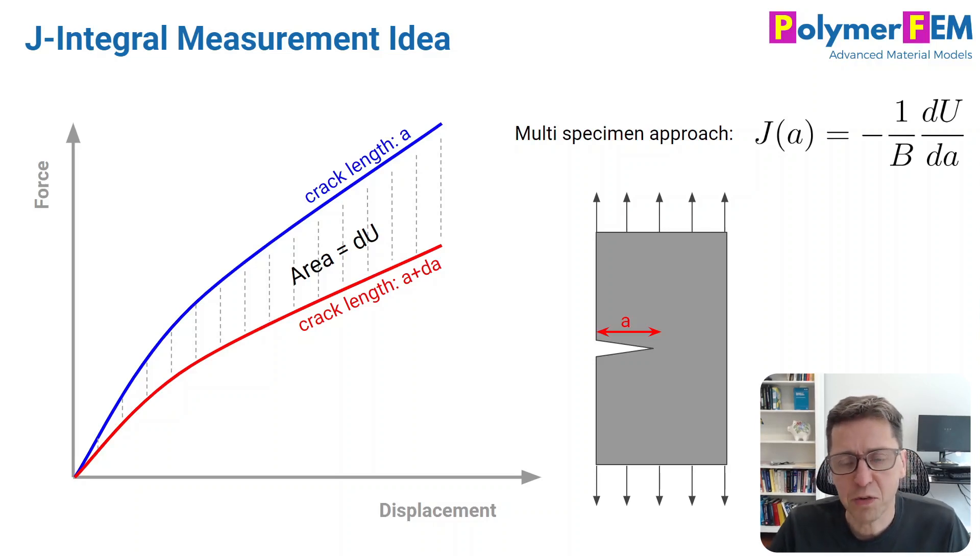There is one very easy way to describe that. You have a tension specimen with a known crack in it. Here is a picture where the crack size is A in length. If I take the specimen and pull on it, and measure the force displacement response, I may get the blue curve here. So it's a force displacement curve of a specimen with a given crack in it.